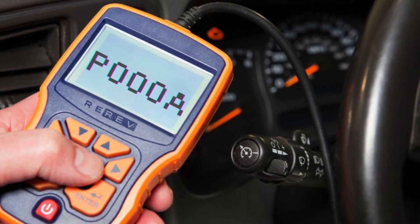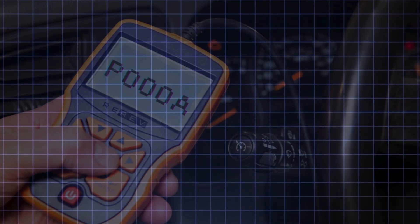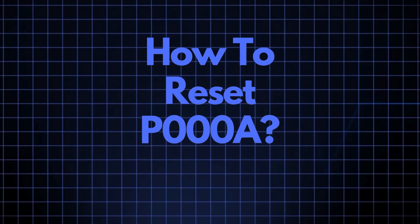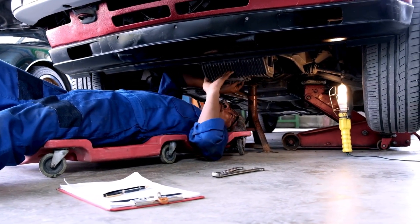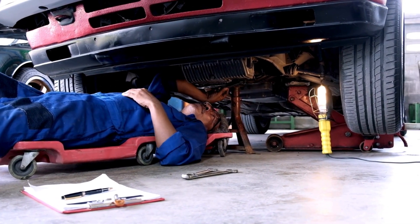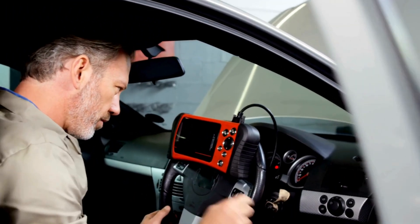Now that we understand what P000A means and where the sensor is located, let's cover how to reset it. Sometimes error codes like P000A appear due to recent maintenance or temporary glitches and may clear up after an OBD-II reset.